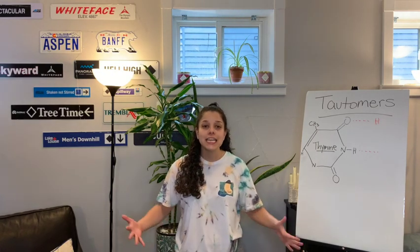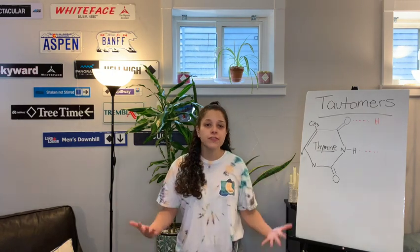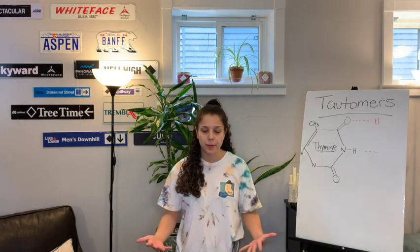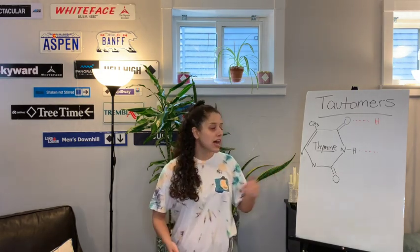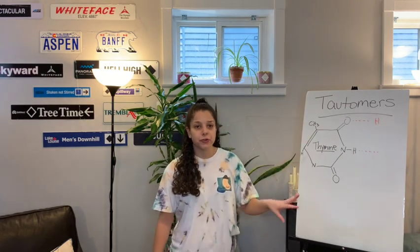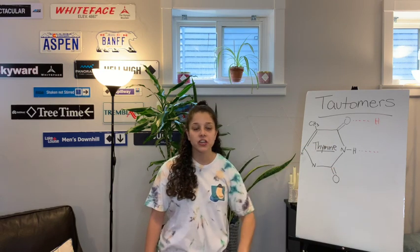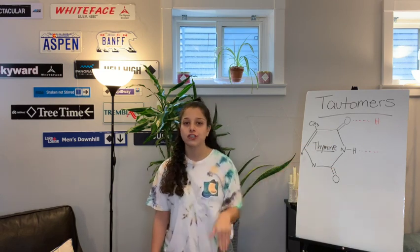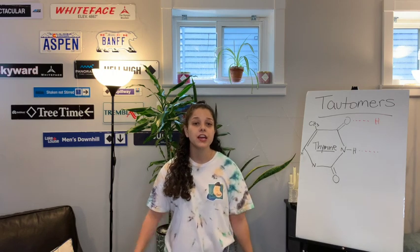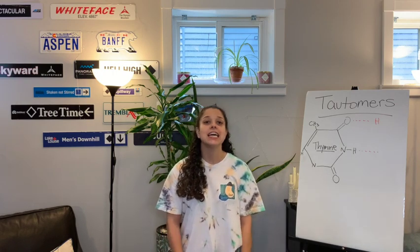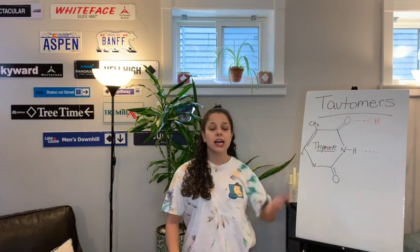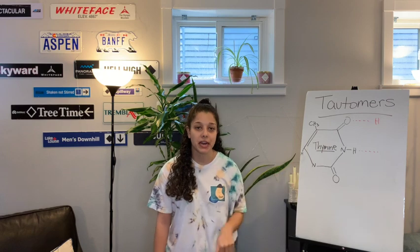A tautomeric shift is a spontaneous event where the individual nitrogenous bases change the way that they base pair. Looking at a normal thymine here, it is base pairing with its adenine group, forming two hydrogen bonds. This is when the thymine is in its keto form — its standard form where it has two hydrogen bonds with its base pair adenine.